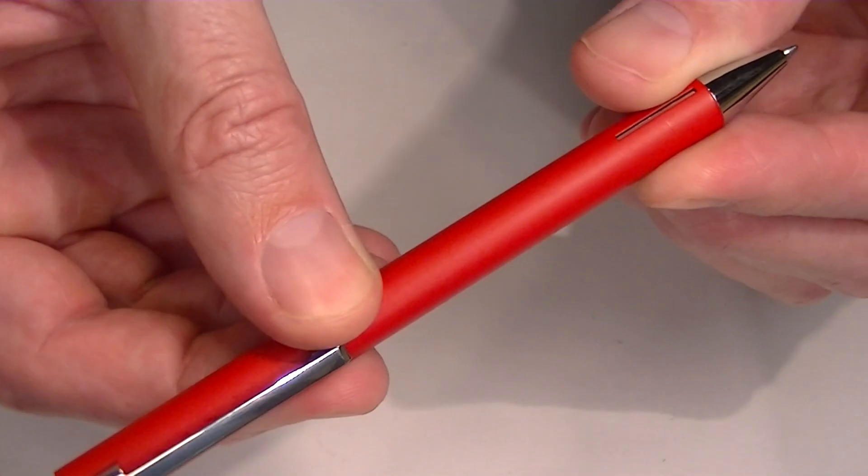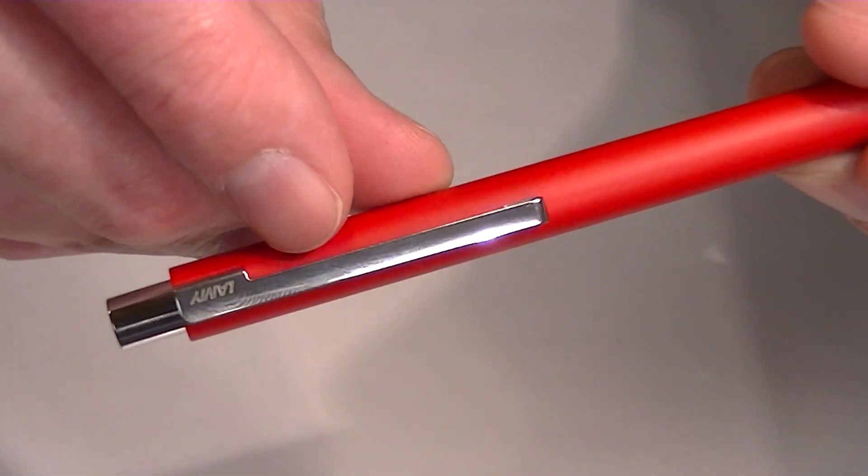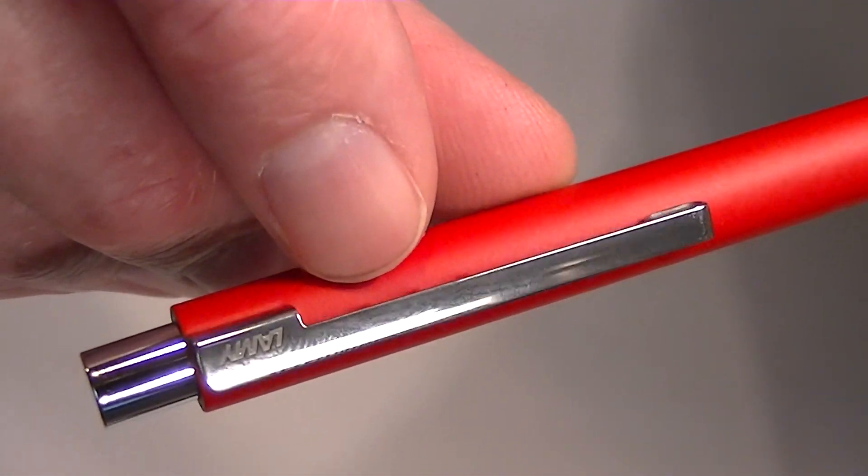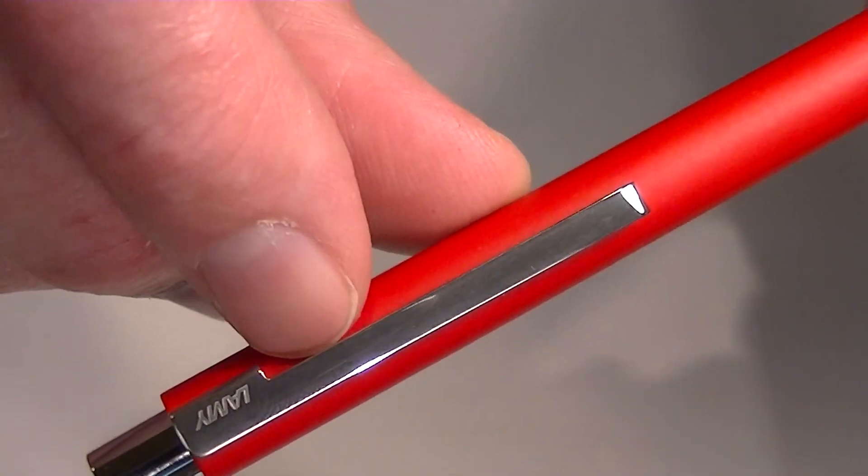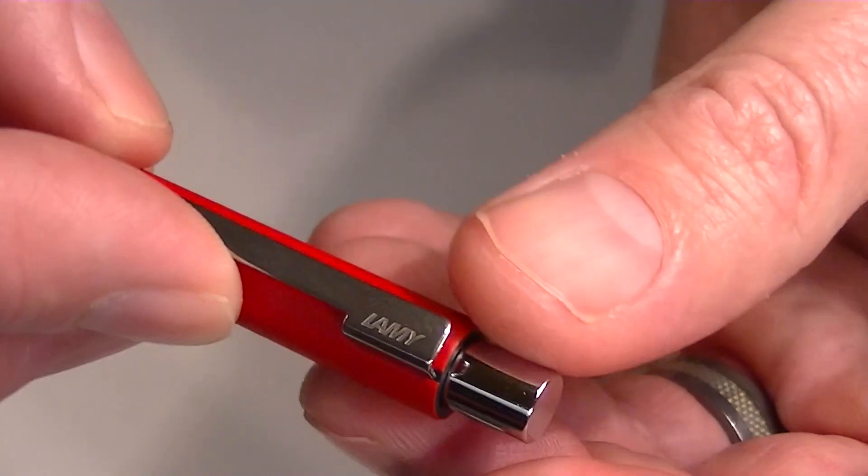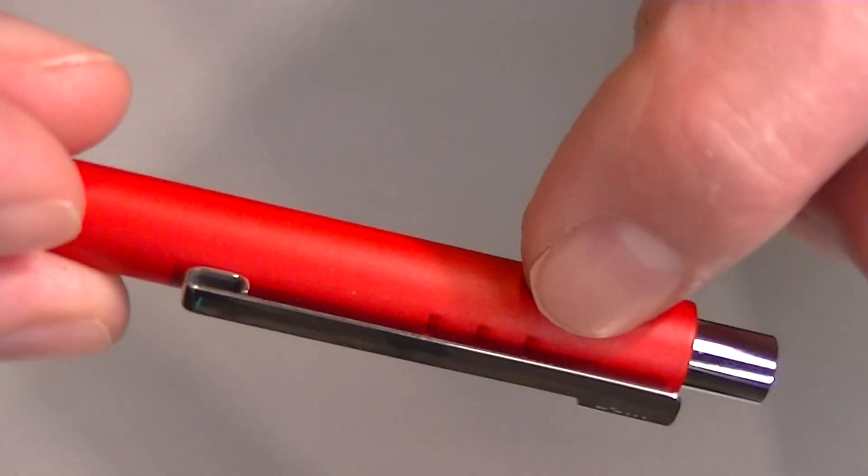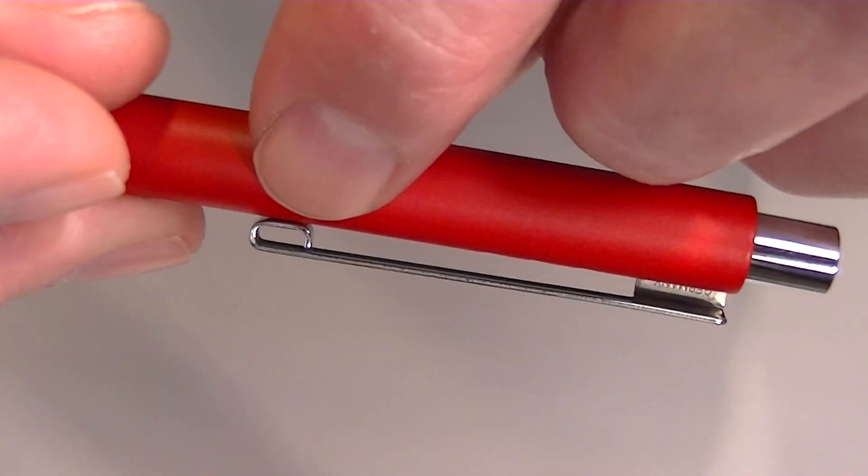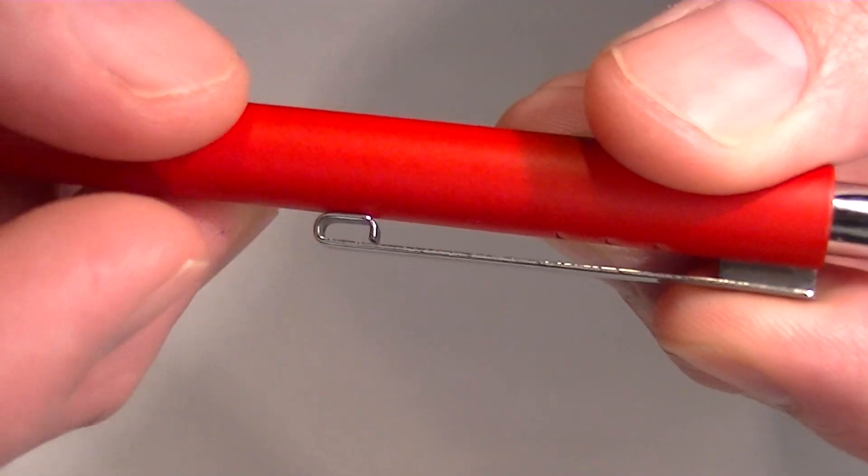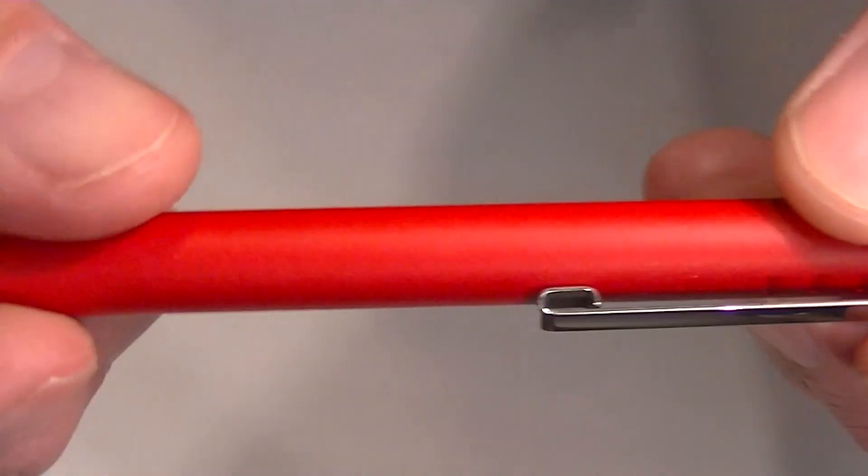It's just a click action ballpoint pen with the chrome clip and the Lamy logo. You can see it's kind of cut there so it's a little wider at the top and then there are three little grooves on the inside and the clip is just bent here around the bottom to slip into your pocket.